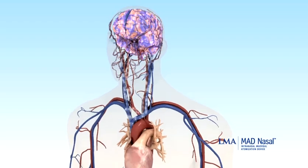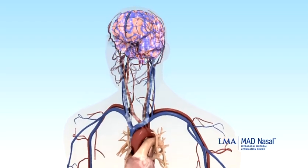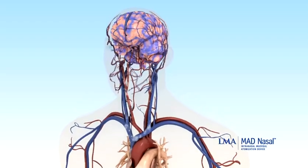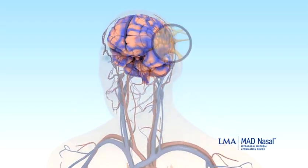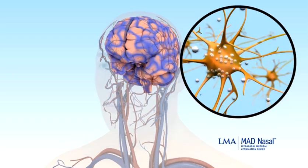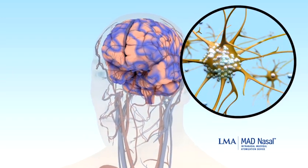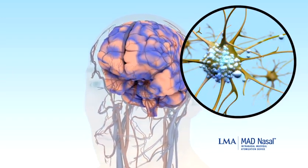Once in the bloodstream, the medication circulates throughout the body. In the central nervous system, it enters the brain and binds to neuroreceptors,